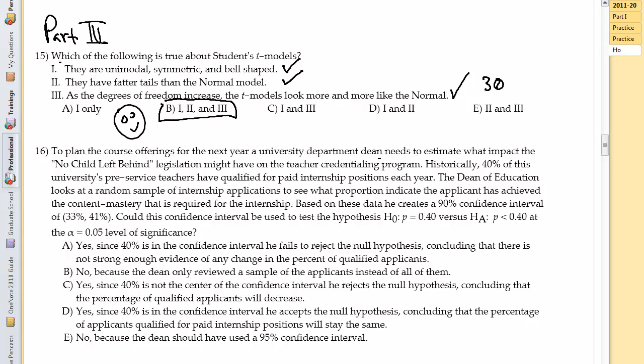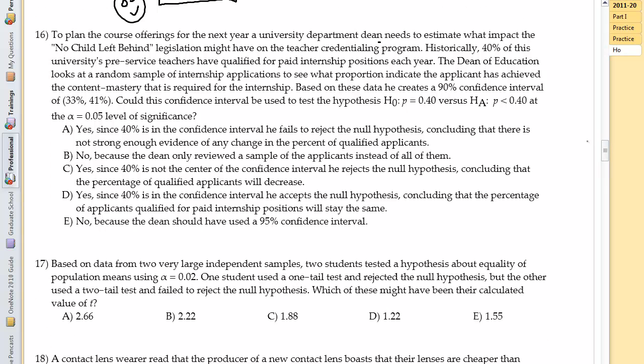And that makes us happy. 16 is a really long problem, but let's try and get through it. So to plan the course offerings for next year, a university department dean needs to estimate what impact the No Child Left Behind legislation might have on teacher credentialing. Historically, 40% of this university's pre-service teachers have qualified for paid internship positions each year.